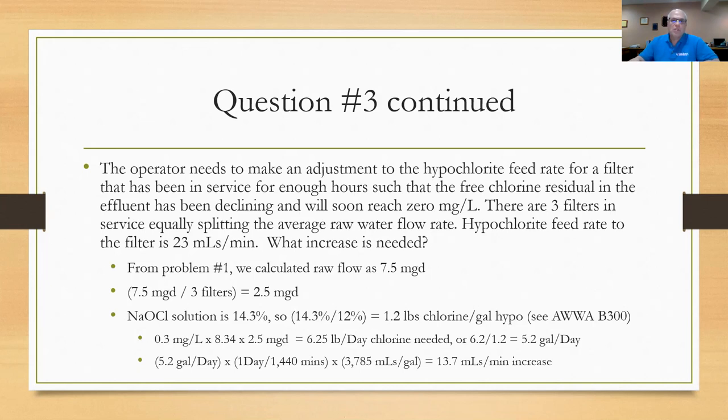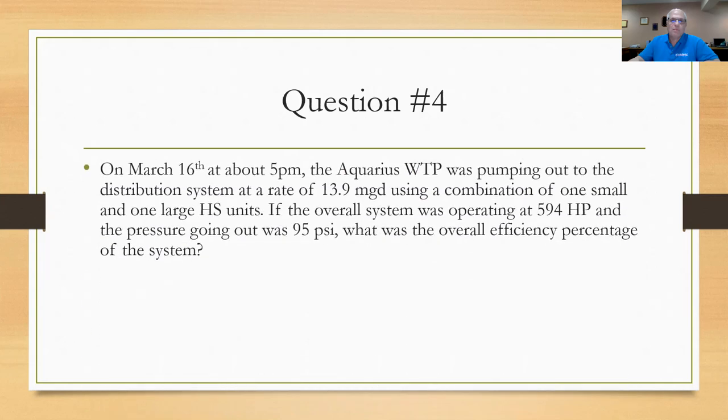Let's try question number four. When I look through the data, I see that on March 16th at about 5 p.m., the Aquarius water plant was pumping out to the distribution system at a rate of 13.9 mgd. Remember, the average was about 7.5 mgd, but on this particular hour they were at a rate of 13.9 mgd. We're using a small pump and a large pump. If the overall system operating at 594 horsepower, the pressure going out the door was 95 psi, what's the overall efficiency percentage of the system? So you've got to take the horsepower formula, recalculate it for efficiency percentage by plugging in some of these numbers.